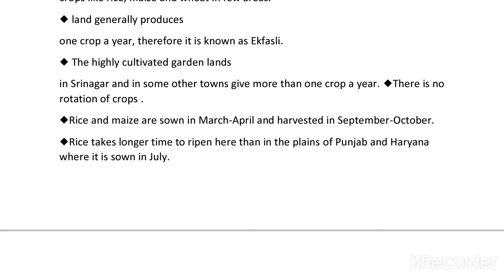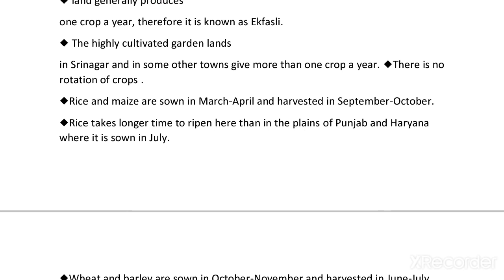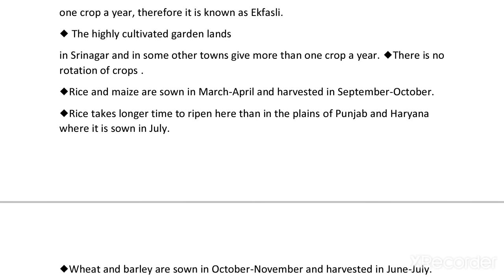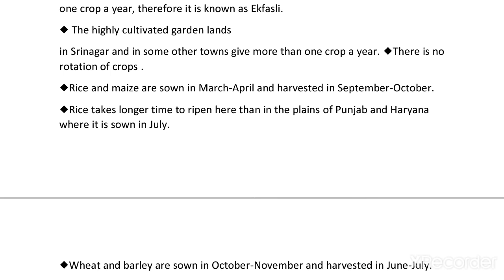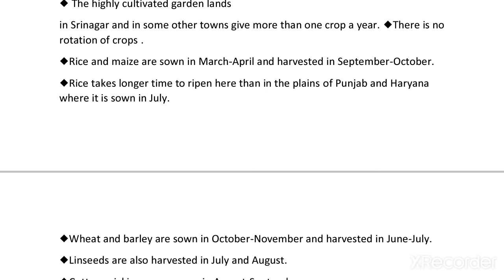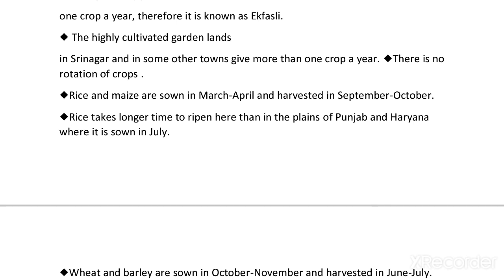Rice takes a longer time to ripen in the Kashmir region than in the plains of Punjab and Haryana, where it is sown in July. Wheat and barley are sown in October and November and harvested in June and July. Linseed is also harvested in July and August. Cotton picking commences in the Kashmir region in August and September.